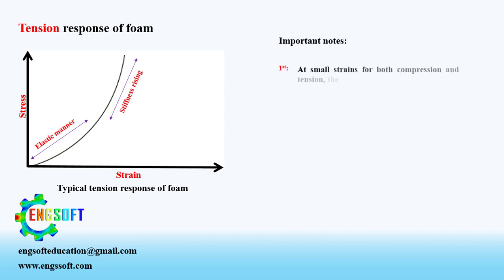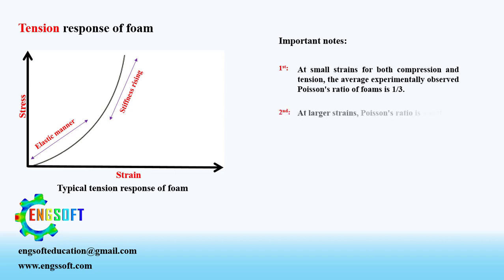Important notes: at small strains for both compression and tension, the average experimentally observed Poisson's ratio of foams is one-third. At larger strains, it is commonly observed that Poisson's ratio is effectively zero during compression, though it is non-zero during tension.